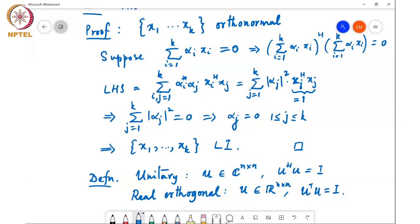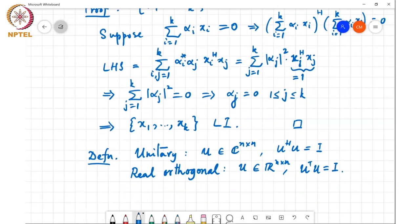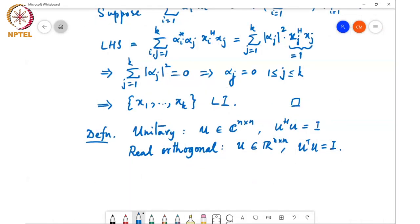OK, now before I state the next result, I want to recall one little property that again we've seen earlier. So if A is in C to the n cross n and BA equals the identity matrix for some B belonging to C to the n cross n, then